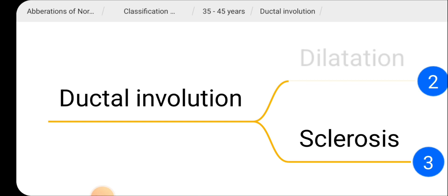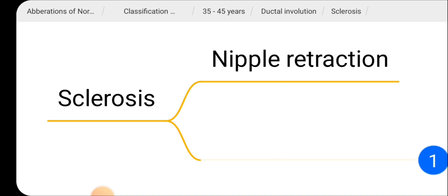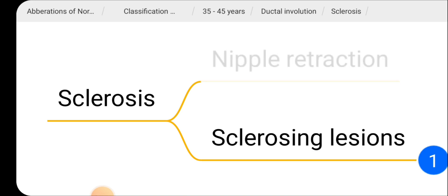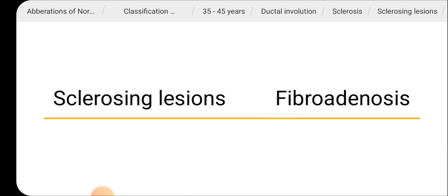Sclerosis can also occur with ductal involution. This sclerosis may give rise to nipple retraction as an aberration, and may also give rise to sclerosing lesions, which may progress to fibroadenosis.